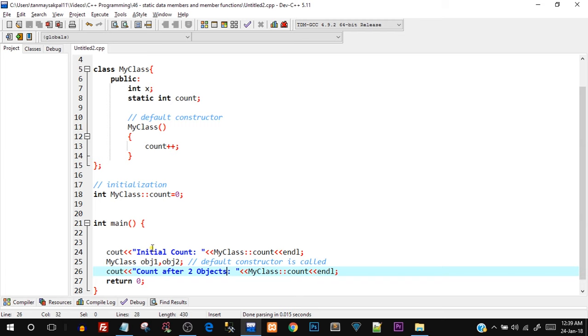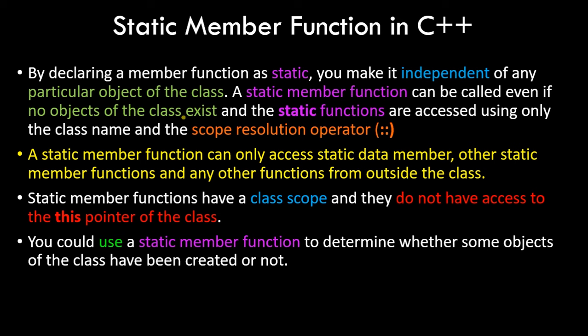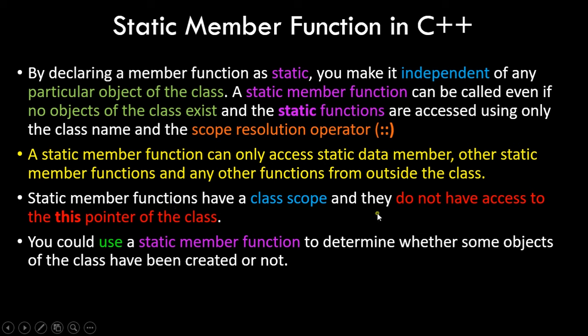Now let's look at static member functions. By declaring a member function as static, you make it independent of any particular object. Just as a static data member is class-level, a static member function can be directly accessed using the class name, the scope resolution operator, and the function name — no object needed. A static member function can only access static data members and other static member functions, plus functions from outside the class.